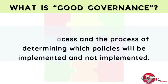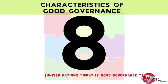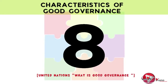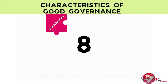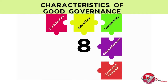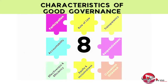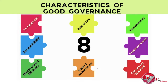According to the United Nations, the concept of good governance has eight major characteristics: participation, rule of law, transparency, responsiveness, consensus-oriented, equity and inclusiveness, effectiveness and efficiency, and accountability. We will now discuss each of these characteristics in more detail and how each relates to public administration and the affairs of government.